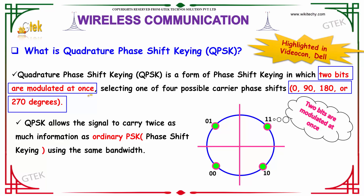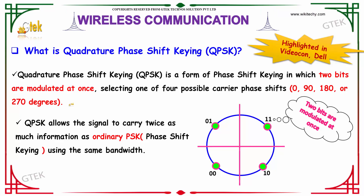So a phase is shifted to one among the four phase shifts. QPSK allows the signal to carry twice as much information as ordinary PSK — that is, phase shift keying — using the same bandwidth.